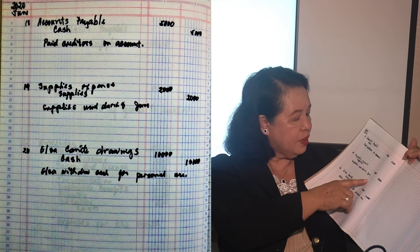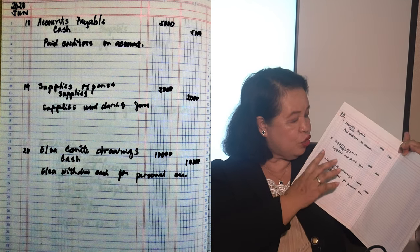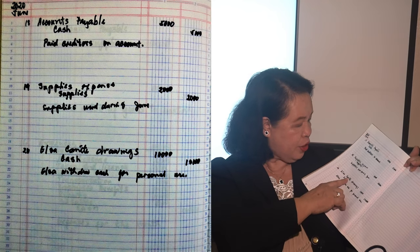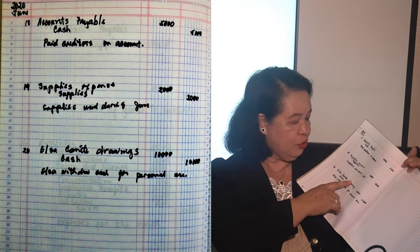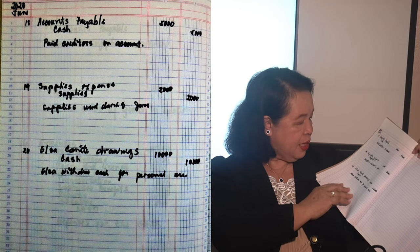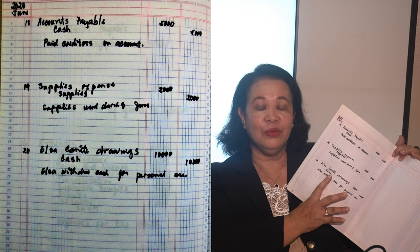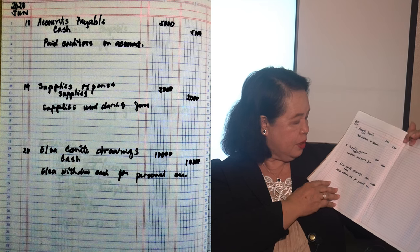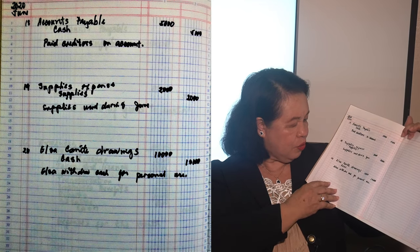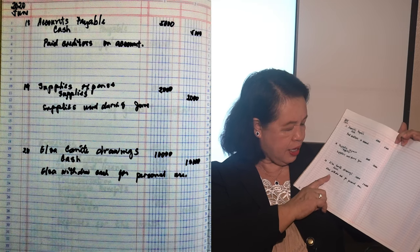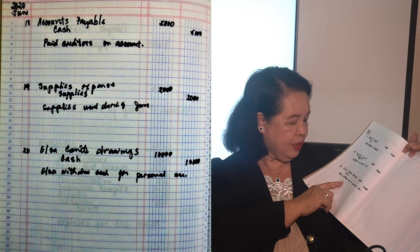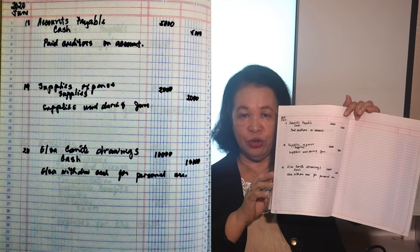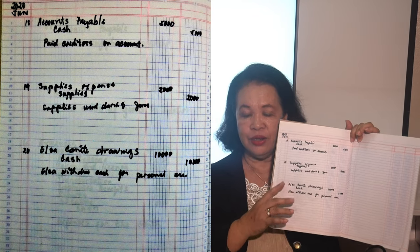On June 19, from the supplies purchased, I consumed 2,000. So I debited supplies expense, credited supplies of 2,000 — 'To record supplies used during the month.' Then on June 20, I withdrew 10,000 from my business for personal use. The entry: debit Elsa Cañete Drawings 10,000, credit cash 10,000. Explanation: 'Elsa withdrew cash for personal use of 10,000.' This is how our journal looks once we have recorded everything.